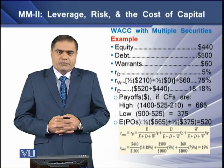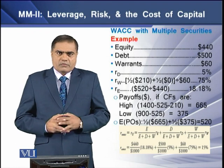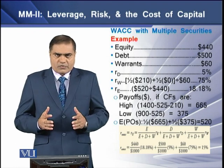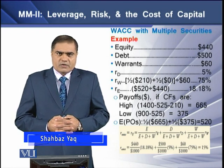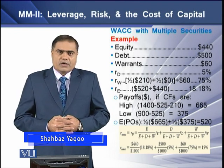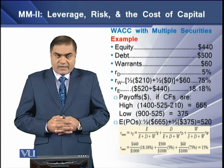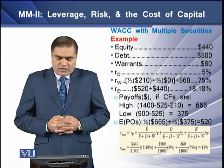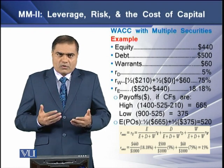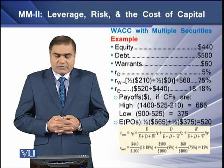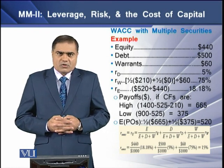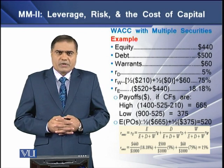Now, how to compute WACC for multiple securities. For this we have an example where we have equity of $440, debt of $500, and warrants of $60. The cost of debt is 5%, the weighted cost of warrants or the return on warrants is 75%, whereas the return of levered equity is equal to 18.18%.